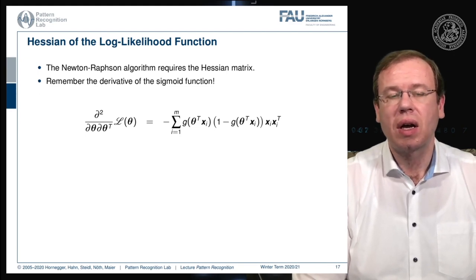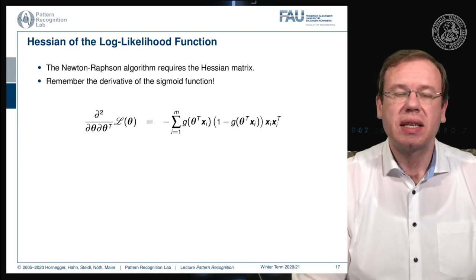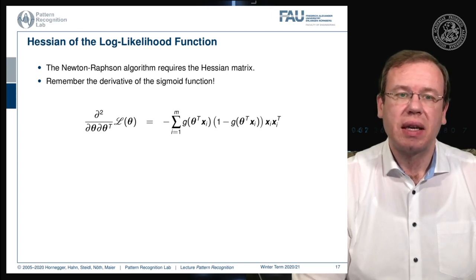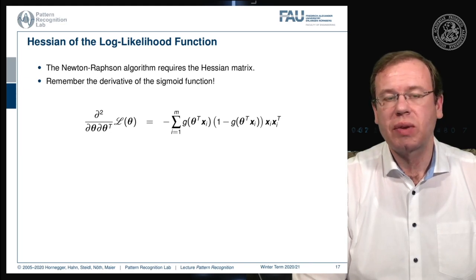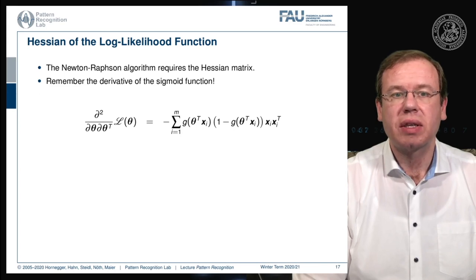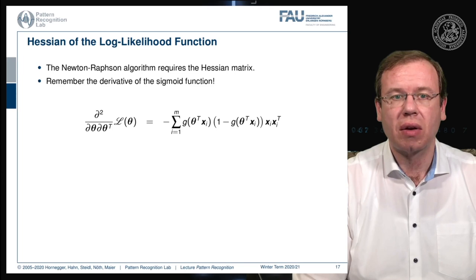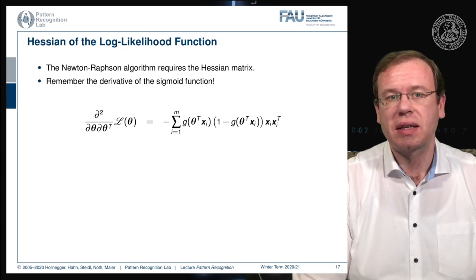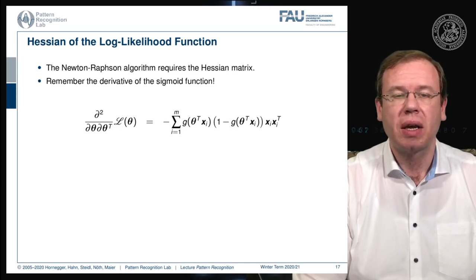With these observations, we were able to find an iteration scheme — the Newton-Raphson iteration. In order to do that, we need the gradient of the log-likelihood function and the Hessian of the log-likelihood function. We derived both of them in just a couple of steps quite elegantly in this set of slides.